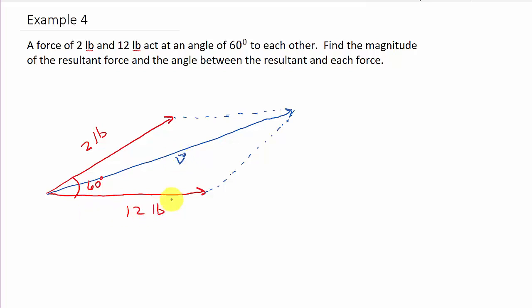So we need to find this. Well, if this is 12 pounds, we know this is 12 pounds. If this is 2 pounds, we know this is 2 pounds. We're looking for this. We know this angle is 60. This angle is 60. Remember, adjacent angles on a parallelogram add up to 180. So that means this angle here would be 180 minus 60, which would be 120. And this would be 120 also.